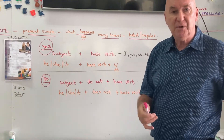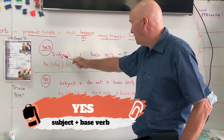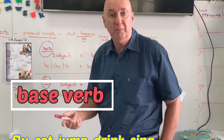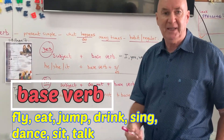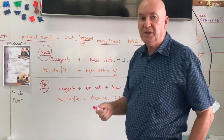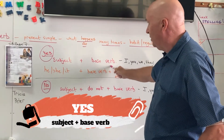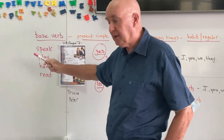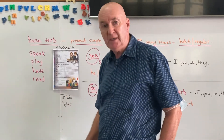When we use the simple present and we're talking about things we do many times, if we say yes, we just have the subject and the base verb. The base verb is the verb you learn in primary one and two — fly, eat, jump, drink, sing, dance, sit, talk. So when we say yes with the present simple, things we do many times, it's just the subject and the base verb.